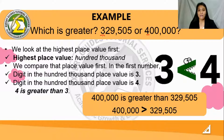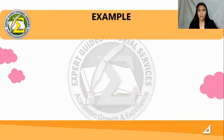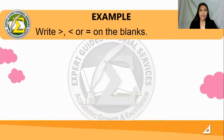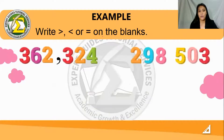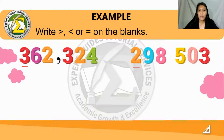If you're still confused, let's try another example. We need to write greater than, less than, or equal on the blank. We have two numbers both in the hundreds place value. The next step is to compare the digits three and two. Remembering our hungry alligator, it will eat the most number of fishes, which is three. So the answer is greater than.